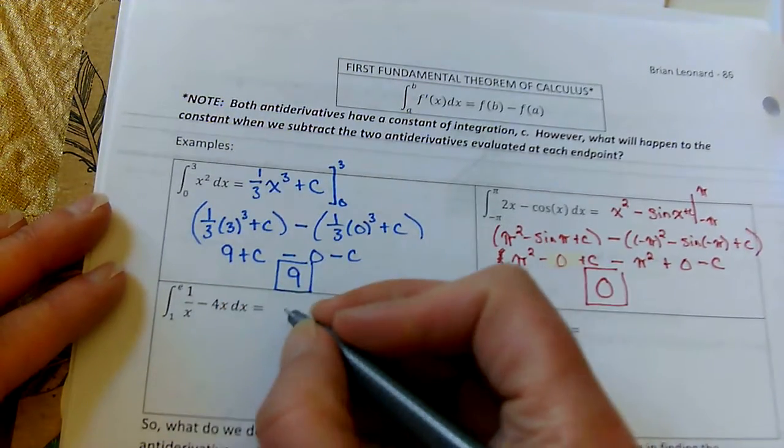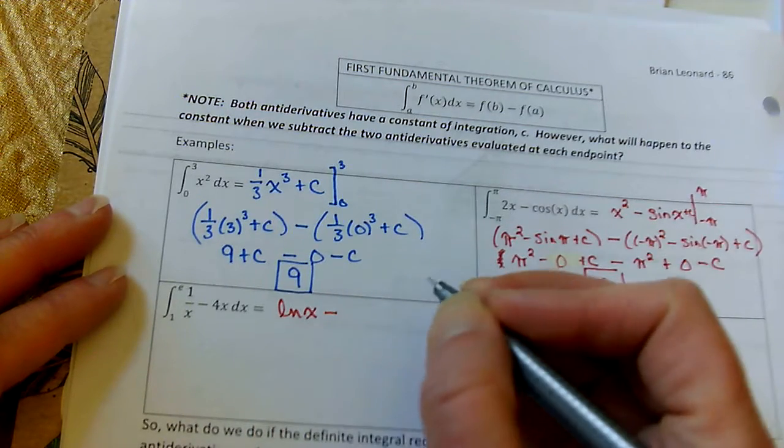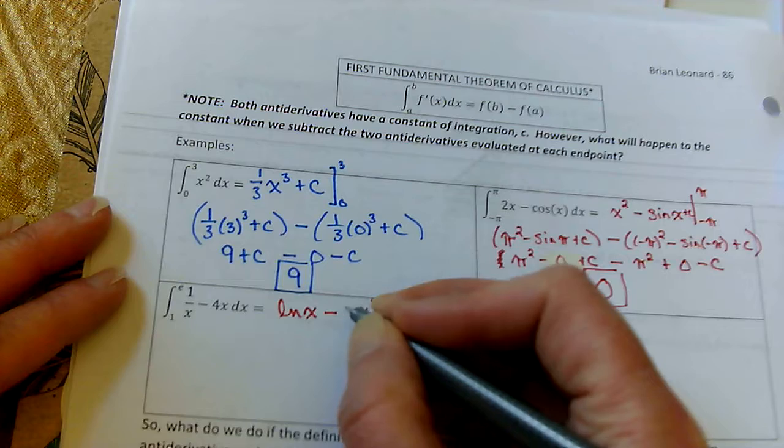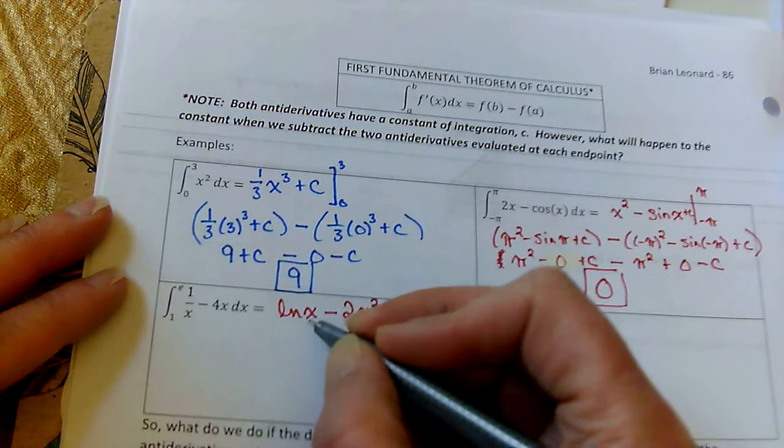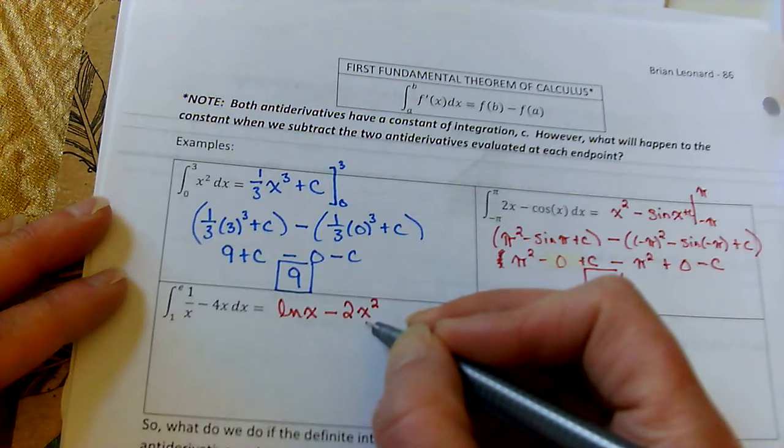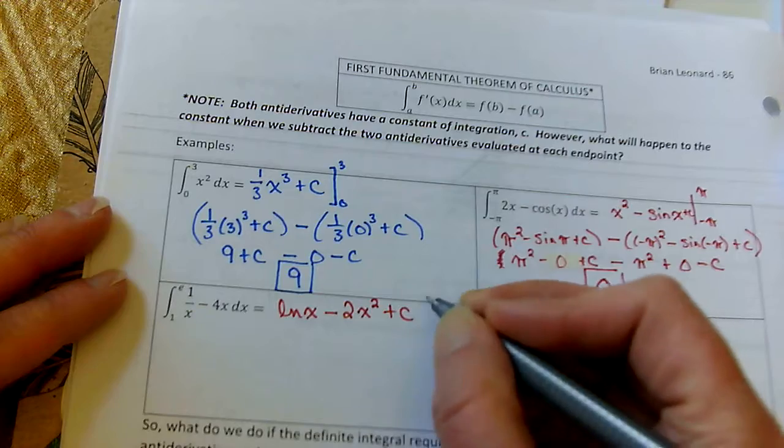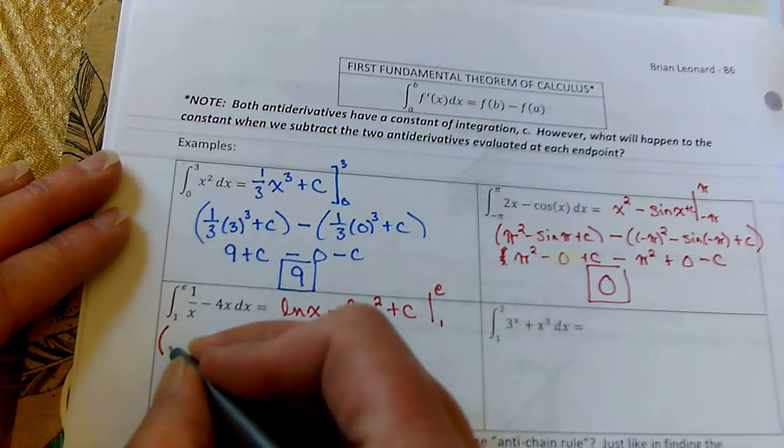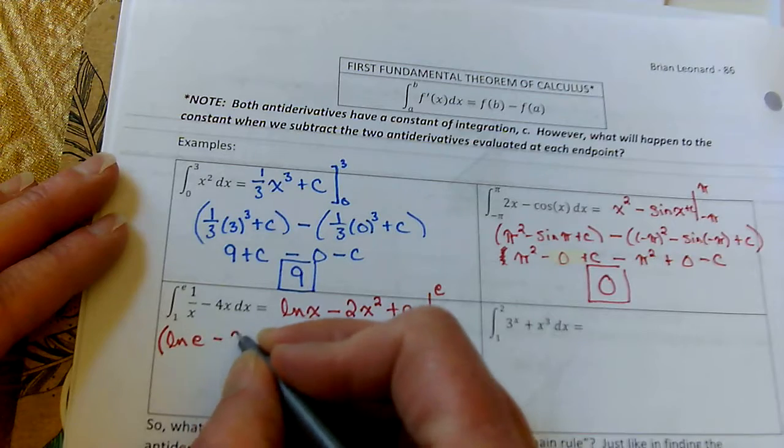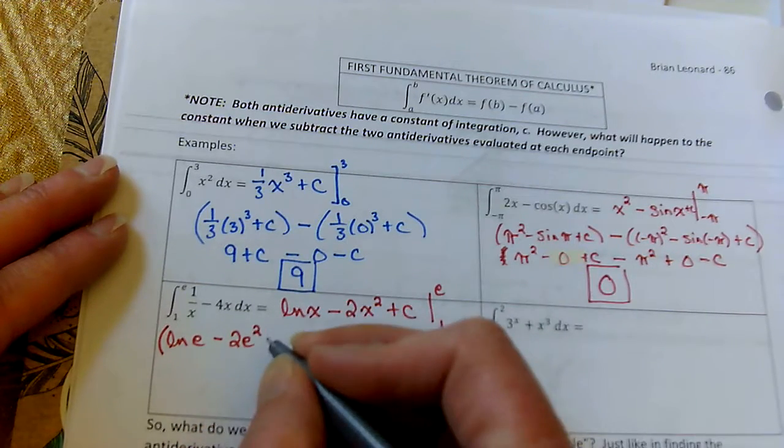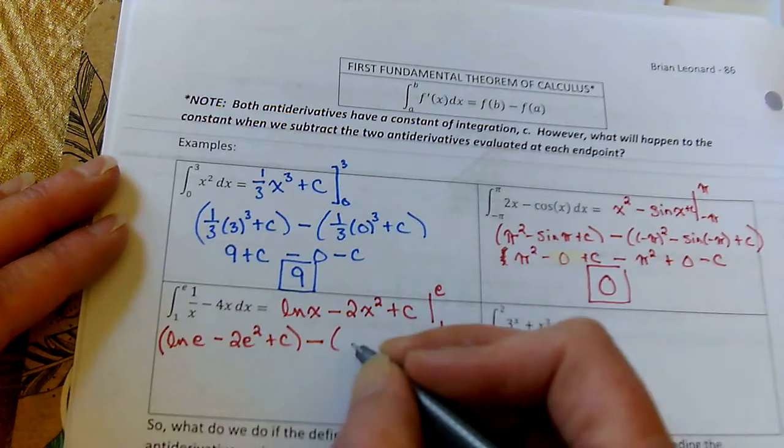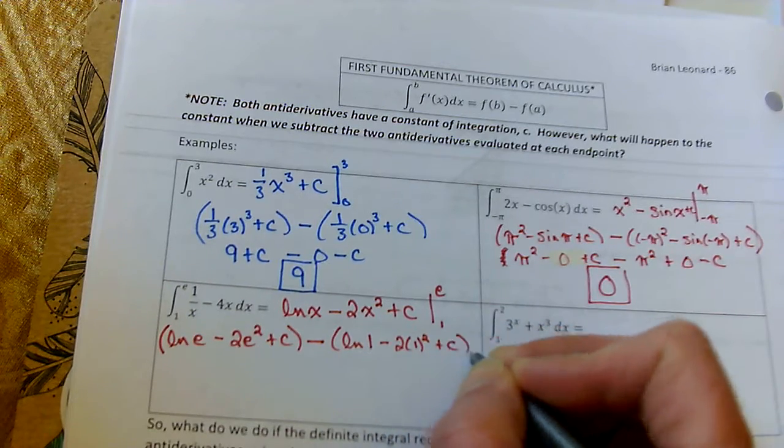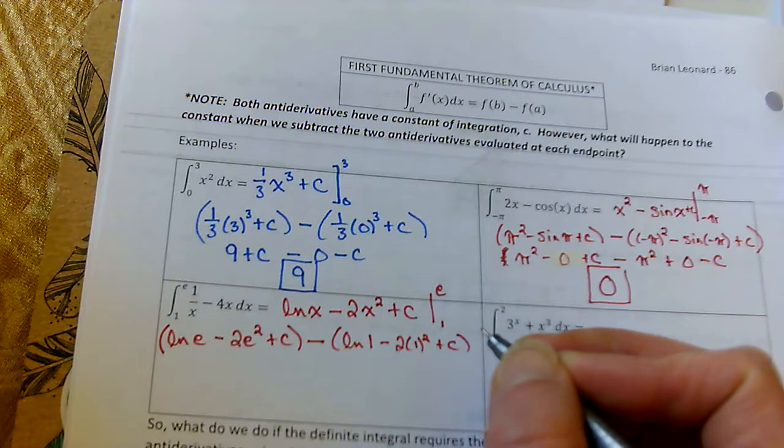Next one. One over x. That's easy. That's natural log x. Minus. To get 4x, that's going to be x squared. 4 divided by 2 is 2. Double check. Natural log x, the derivative is 1 over x. Derivative of 2x squared is 4x. It works. We're going to evaluate this from 1 to e. So, plugging in e. Natural log e minus 2e squared plus c. Minus. Plug in 1. Natural log 1 minus 2 times 1 squared plus c.